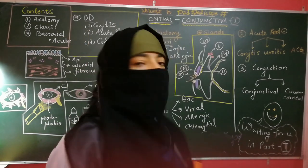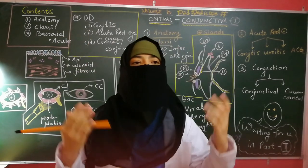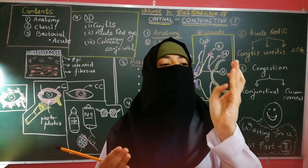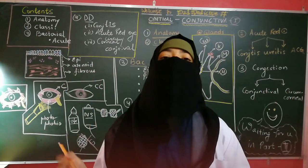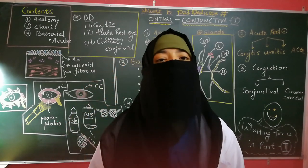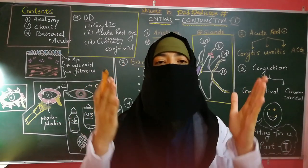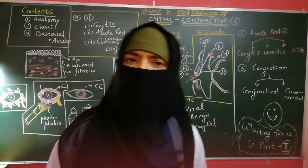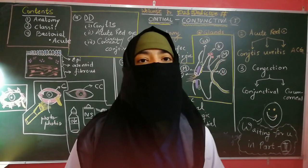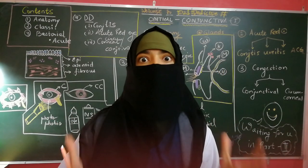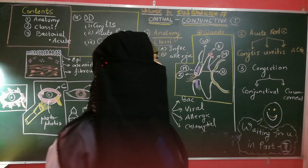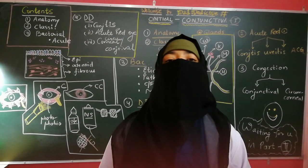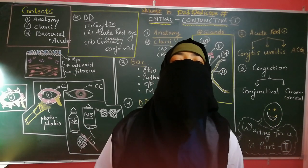That was all about part one. We discussed the basics — anatomy of the conjunctiva, conjunctivitis classification, bacterial conjunctivitis, differential diagnosis between types of conjunctivitis, causes of acute red eye, and the two types of congestion. Thanks for watching — please like, subscribe, and share.